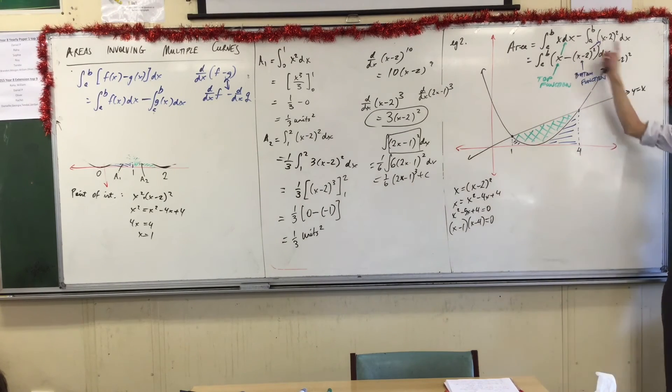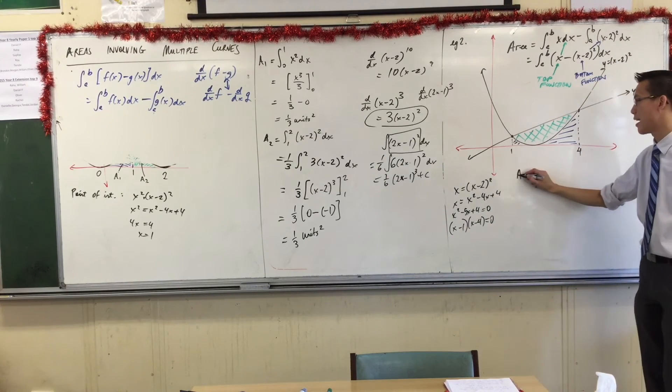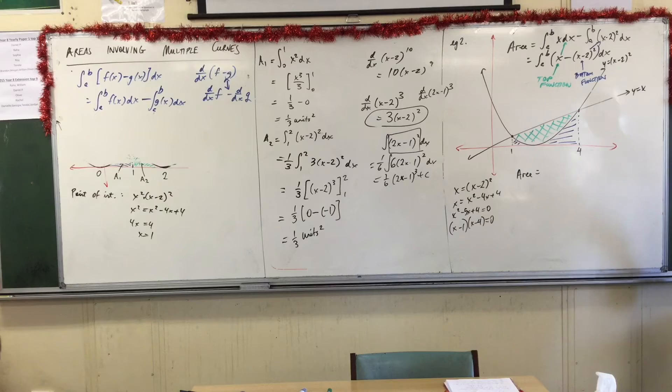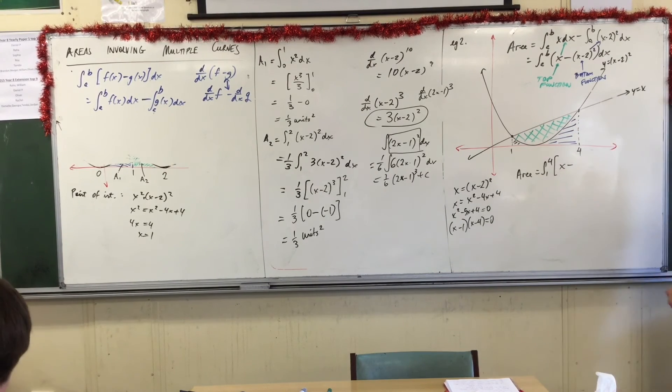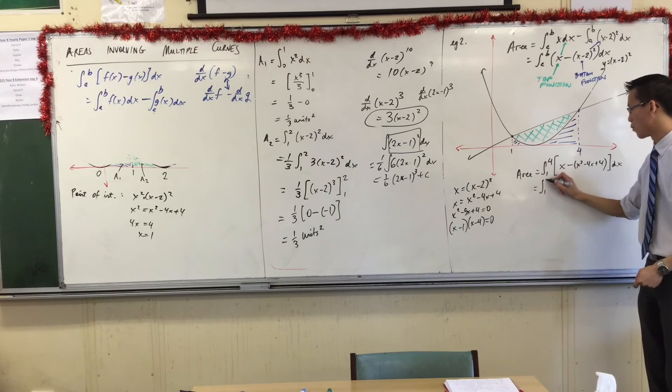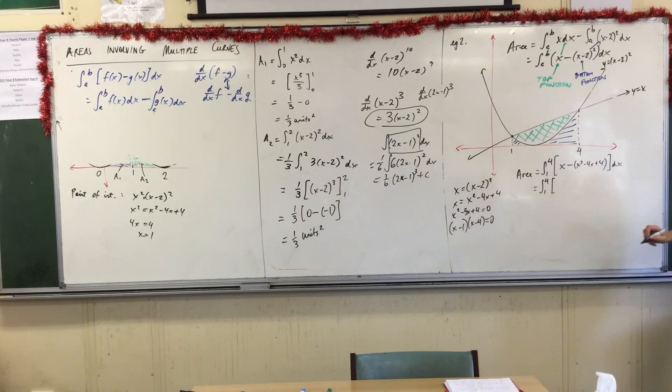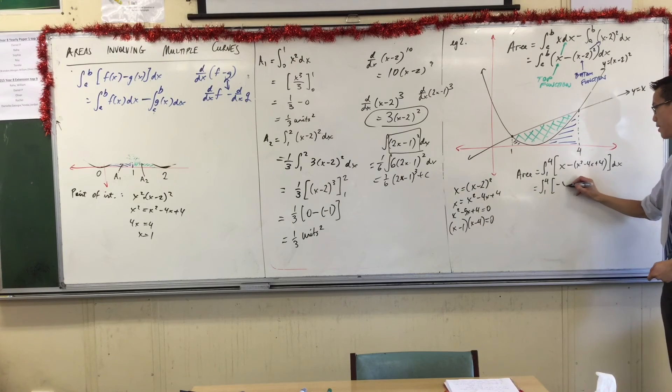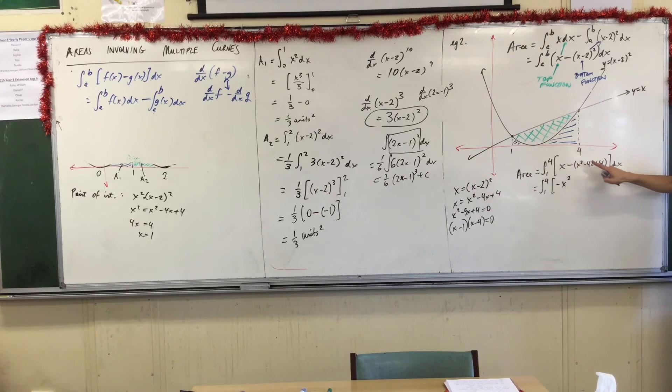I'm going to put in my top integrated first, my top function, and then I'm going to subtract my bottom function. So, I might as well expand this now, because I'm going to have to collect some like terms in a second. And I'm going from 1 to 4 of, what do we get here? Minus x squared. x plus 4x. So, this is plus 5x. You okay with that? And then I've got minus 4. Hang on. Does it look okay? We happy? Can we factorize this? x squared minus 5x plus 4. This is this, actually.